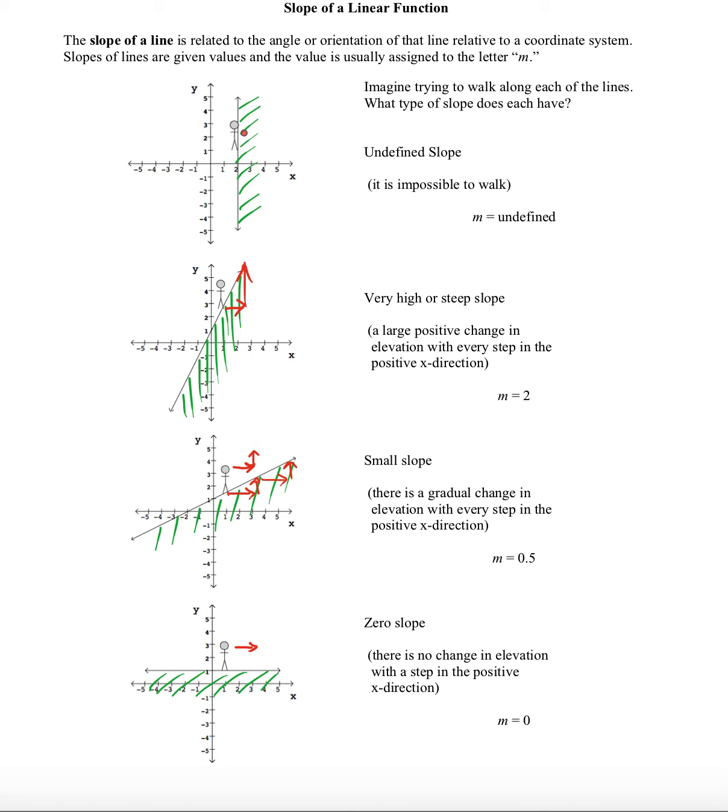Because remember, our goal is to go to the right. But in a situation like this, we can't go to the right and stay on the line. And for that reason, we're going to say that the m is undefined. A cliff has an undefined slope, and so a vertical line has an undefined slope.